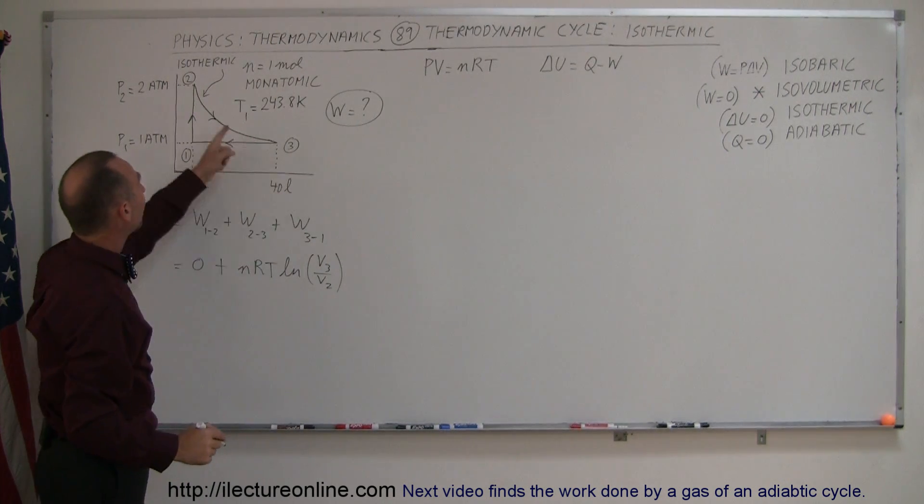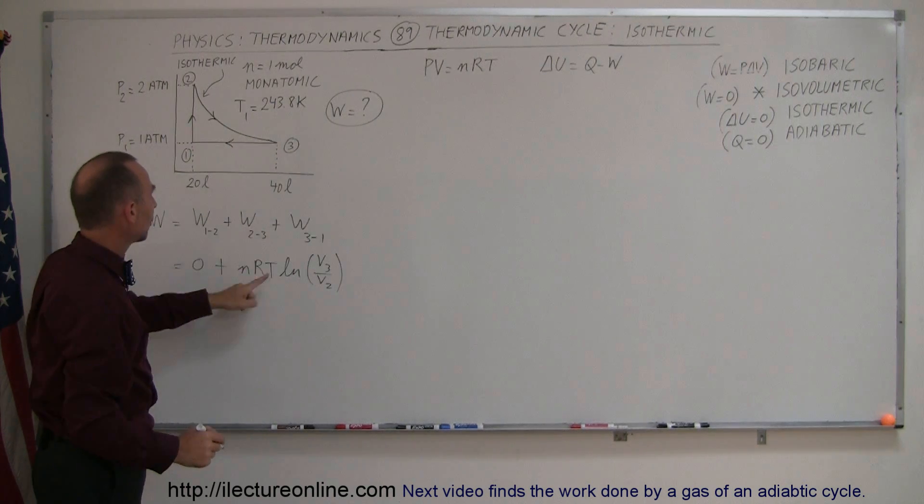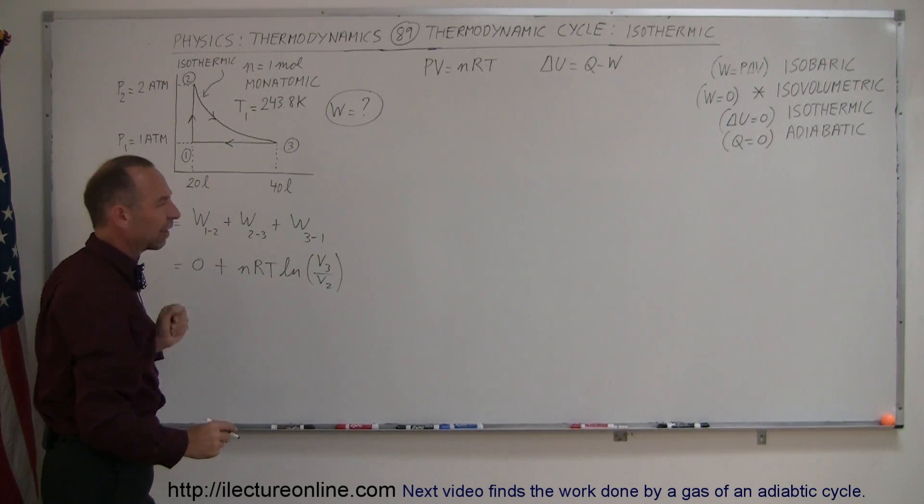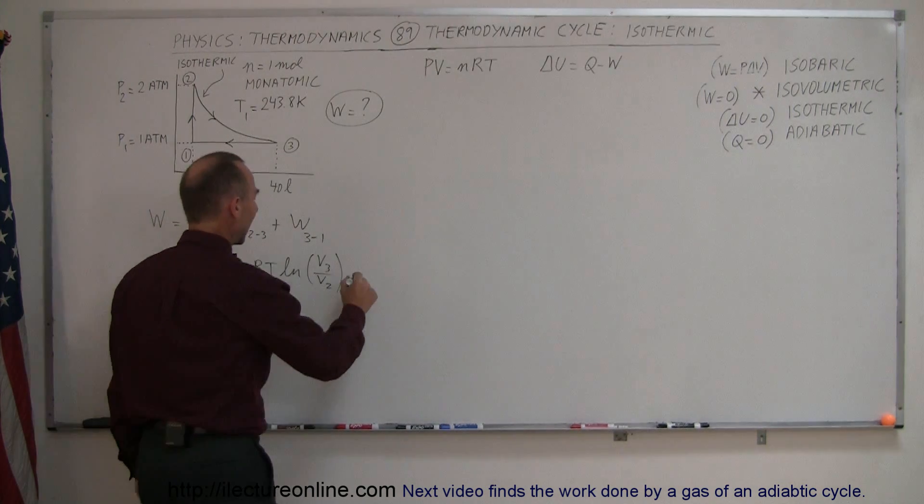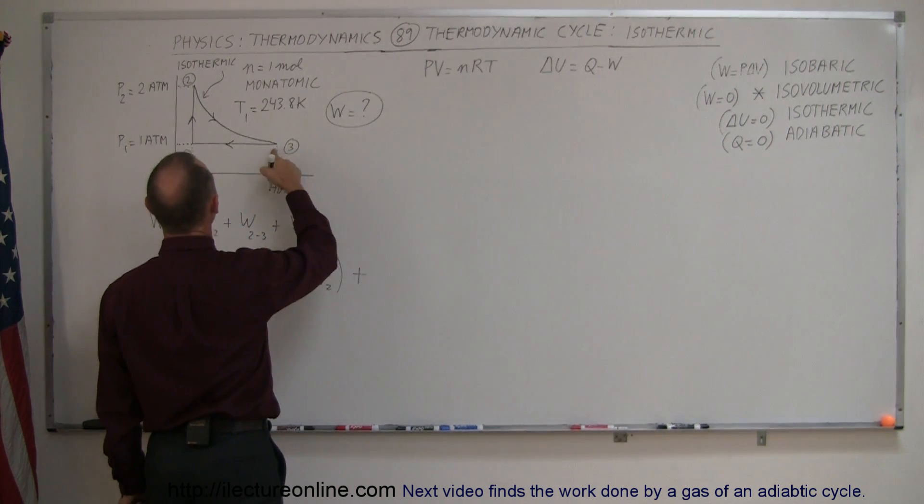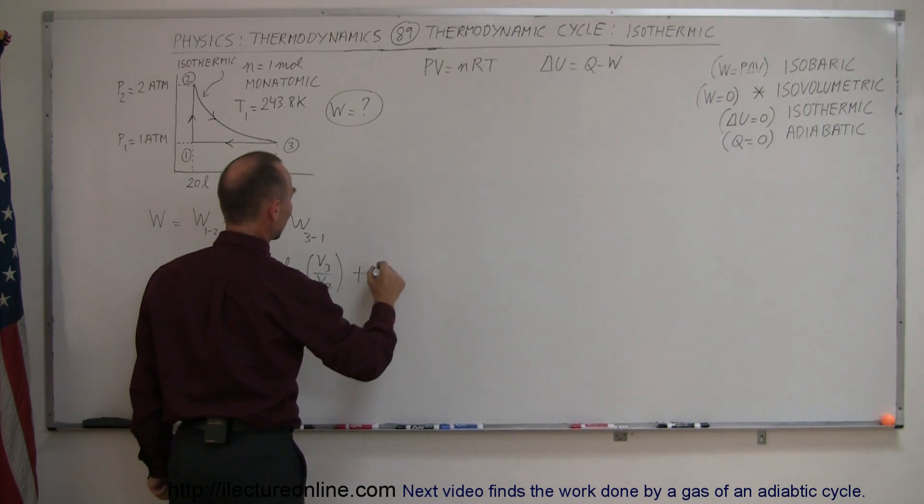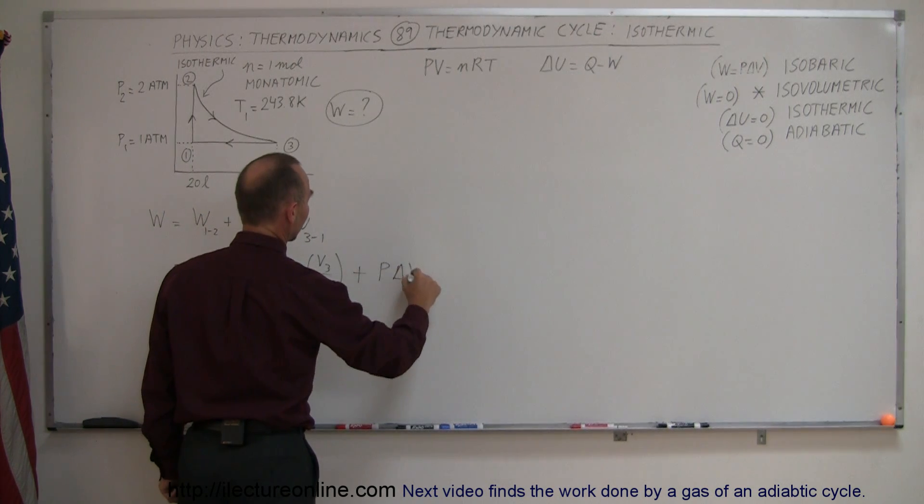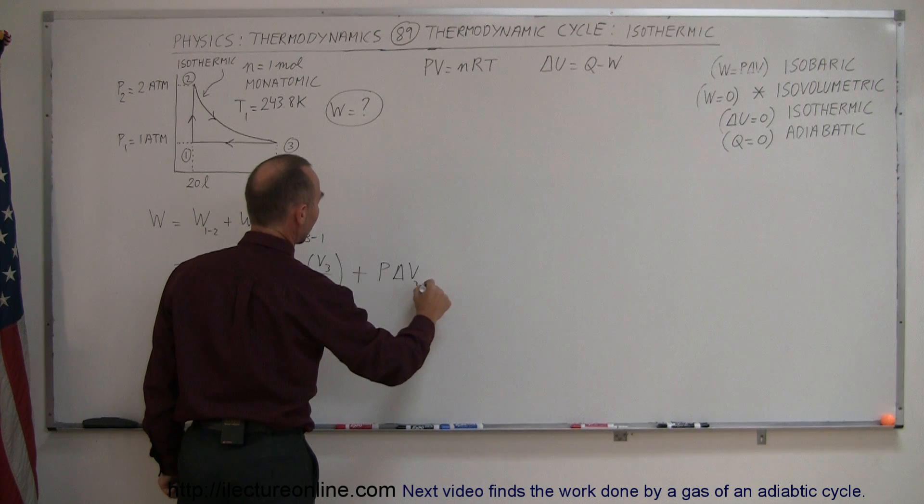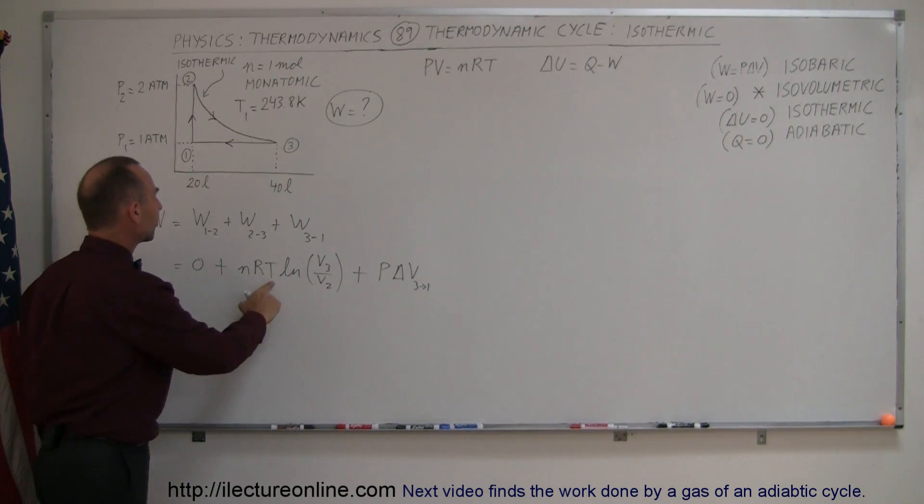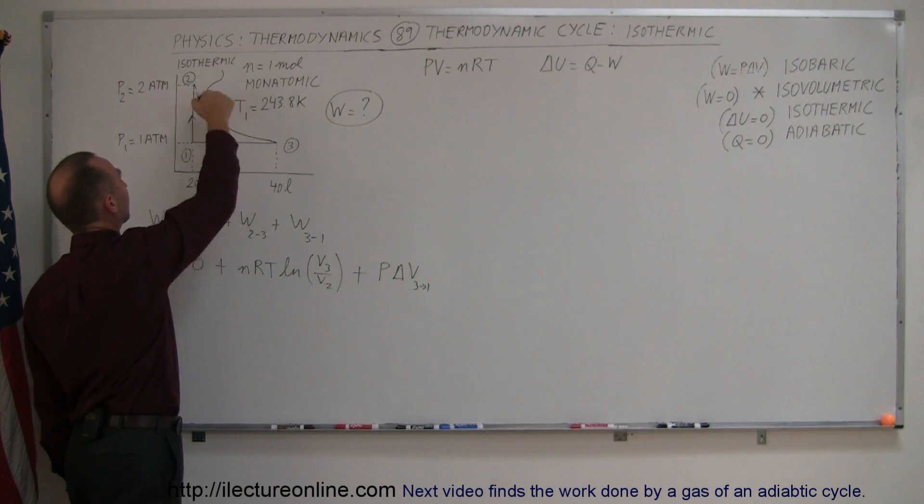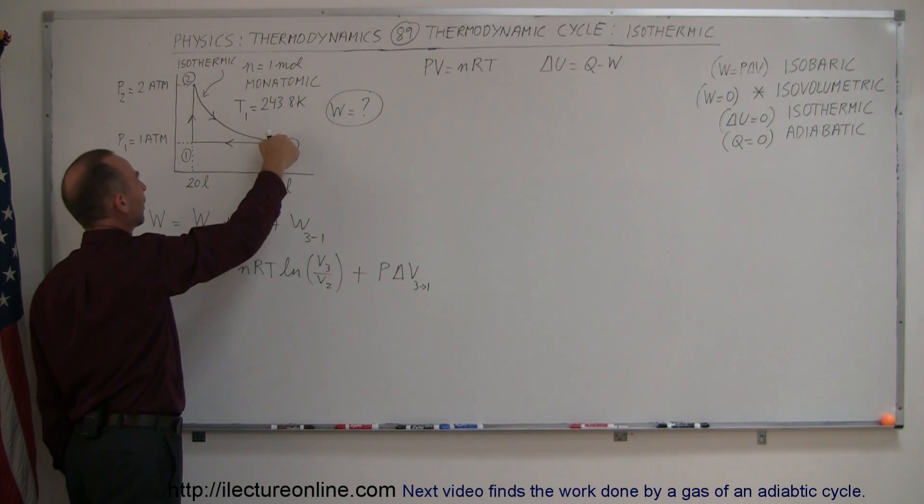All right, we do know the volumes at two and three, but we don't know the temperature of the isothermic process, so we're going to have to find what that is. And then we add to that the work done by the last process right here from three back to one, that would be the pressure times the change in the volume going from three back to one. So the only thing we don't know is the temperature at this point right here, which would be the temperature at two or the temperature at three.